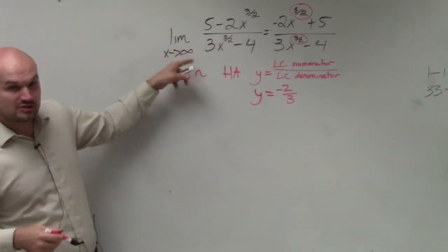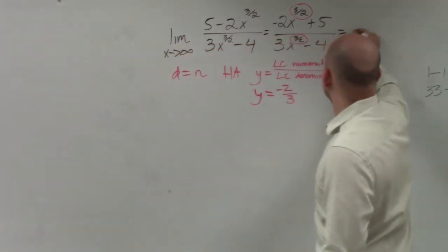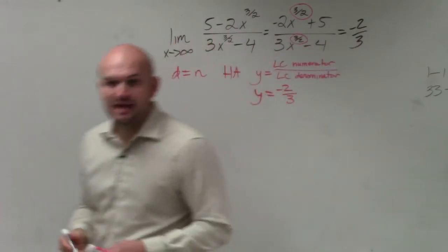So the limit as x approaches infinity is just going to equal its horizontal asymptote, which in this case, I'll just rewrite it like this to save some time, is just going to be negative 2 thirds.